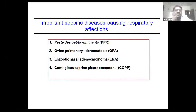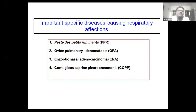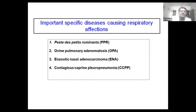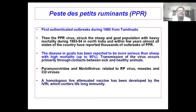You may not have heard about enzootic nasal adenocarcinoma — this is a new disease and many people don't know about it. It is similar to ovine pulmonary adenomatosis (OPA), and in India there is no comprehensive report on enzootic nasal adenocarcinoma. Another important disease is contagious caprine pleuropneumonia (CCPP), which is a most important disease of goat. So first, we will discuss about PPR.